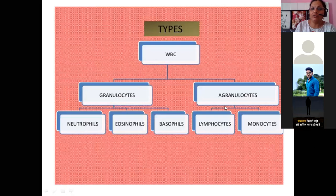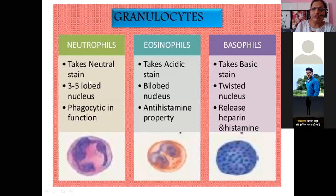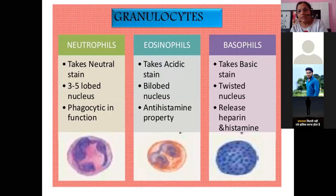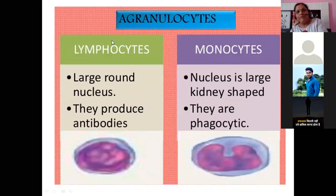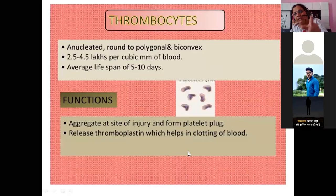WBC types: granulocytes and agranulocytes. Granulocytes include neutrophils (neutral stain, 3 to 5 lobed nucleus, phagocytic function), eosinophils (acidic stain, bi-lobed nucleus, anti-histamine properties), and basophils (basic stain, twisted nucleus, release heparin and histamine). Agranulocytes include lymphocytes (large round nucleus, produce antibodies) and monocytes (large kidney-shaped nucleus, phagocytic in nature).